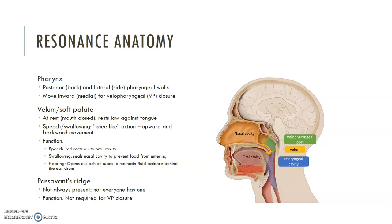There's an additional structure called Passavant's Ridge — it's a muscle bulge just underneath the area of the adenoids, and the adenoids are found on the back portion of the pharynx. It's not always present, but it is in some people. It's not required for velopharyngeal closure, but you may see it on some of the videos we look at. Just know that it is an additional muscle on the back of the pharynx.